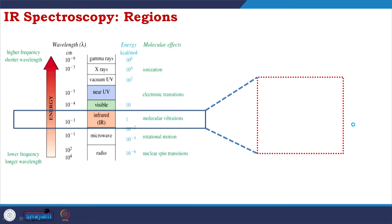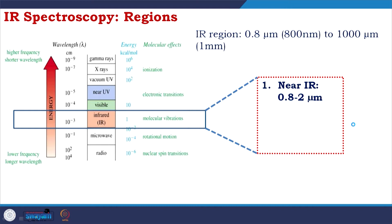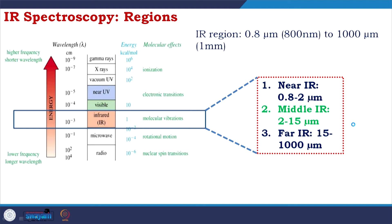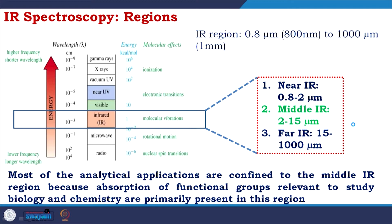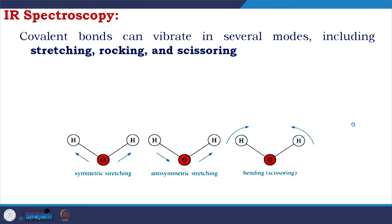The infrared region spans 0.8 micrometer to 1000 micrometer wavelength, divided into three parts: near infrared (0.8 to 2 micrometer), middle infrared (2 to 15 micrometer), and far infrared (15 to 1000 micrometer). Most analytical applications are confined to the middle IR region. Covalent bonds can vibrate in several modes including stretching, rocking, and scissoring.